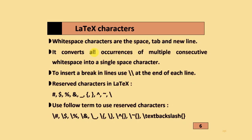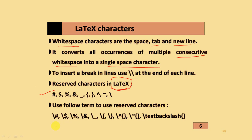Regarding LaTeX characters: white space characters include space, tab, and new line. LaTeX converts all occurrences of multiple consecutive white spaces into a single space character. To insert a line break, we use a double backslash at the end of each line. There are also reserved characters used by LaTeX. If you want to add them into a document, you use a backslash before the character.